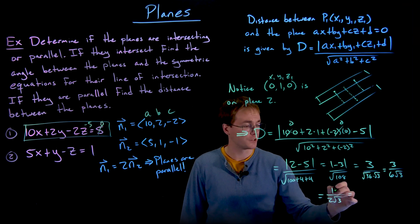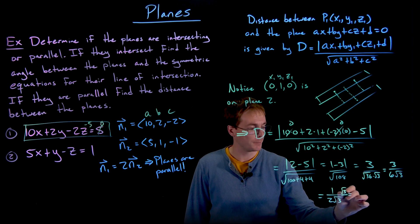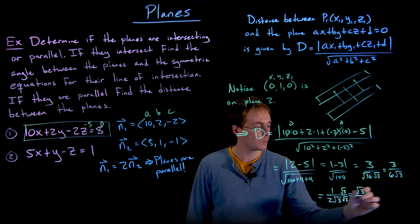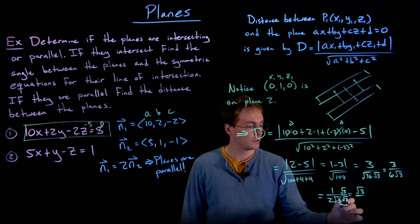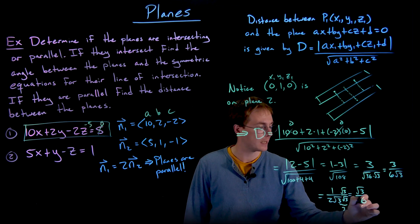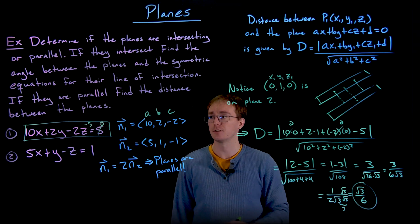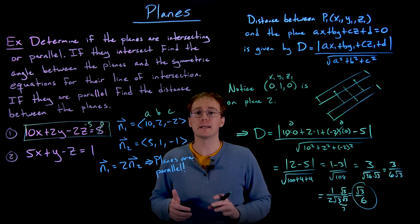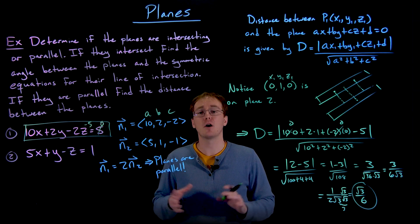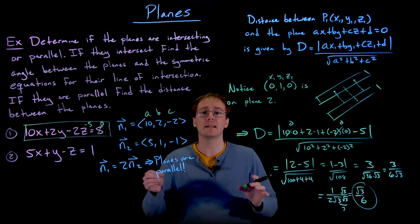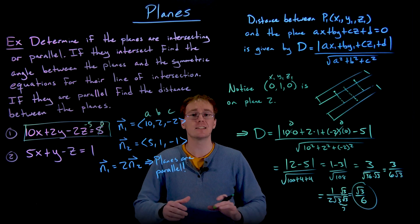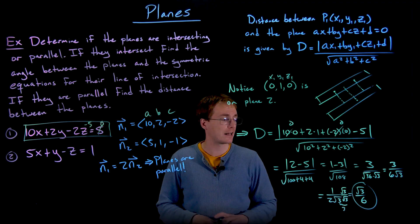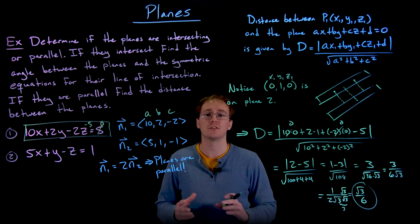Rationalizing the denominator by multiplying both above and below by the square root of 3, we end up with the square root of 3 over 2 times 3, which is the square root of 3 over 6. So we have determined that these two planes are not intersecting — they are parallel planes — and by using the process for finding the distance between a point and a plane, we found that the distance between these two planes is exactly the square root of 3 over 6 units.